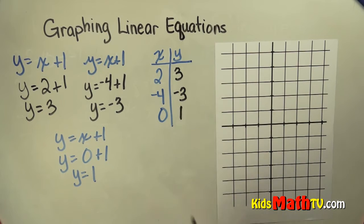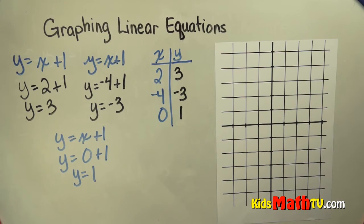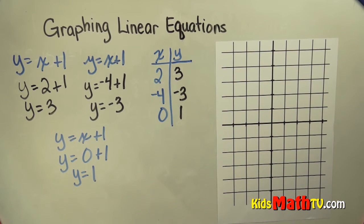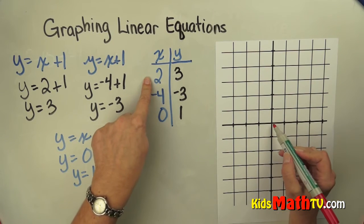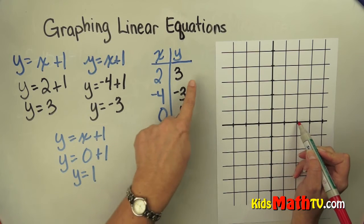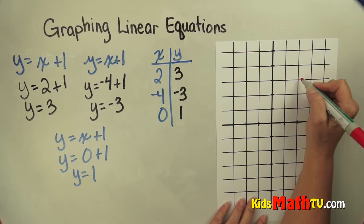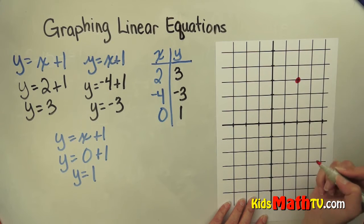Alright, so I'll do that in black so you can see easily. Now I can graph these values on my coordinate grid. So 2, a positive 2 means I go to the right 2 times. And positive 3 means I go up 3 times. 1, 2, 3. So that is positive 2, positive 3.